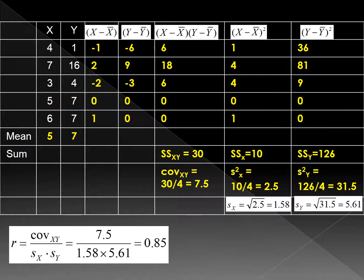Using this table, you can compute the deviation scores for x. Then you square the deviation scores of each x — you will have the column (x minus x-bar) squared. You will have 1, 4, 4, 0, 1. Add the column together: the sum of squares of x is 10. Then divide by n minus 1 — you will have the variance of x, which is 10 divided by 4, giving 2.5.